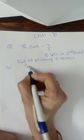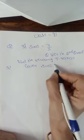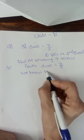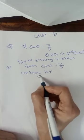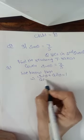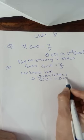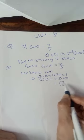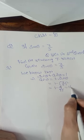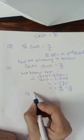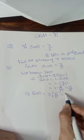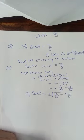Given sin θ = 3/5, and we know that sin²θ + cos²θ = 1. It implies cos²θ = 1 − sin²θ = 1 − (3/5)² = 1 − 9/25 = 16/25. It implies cos θ = ±√(16/25) = ±4/5.